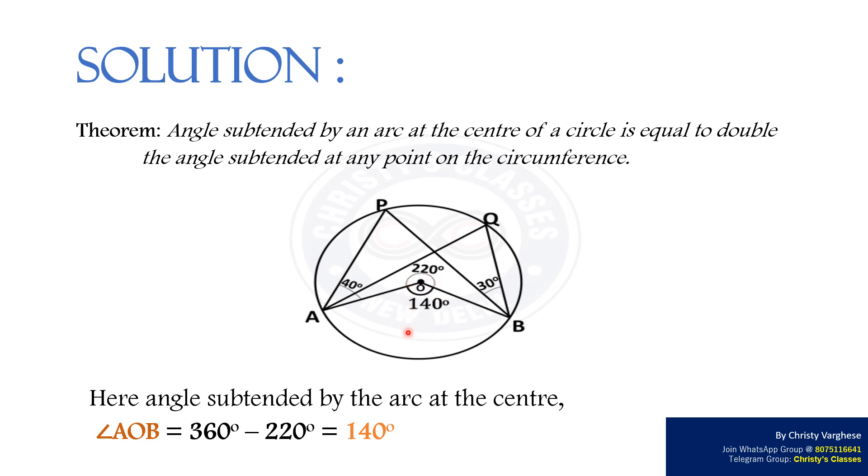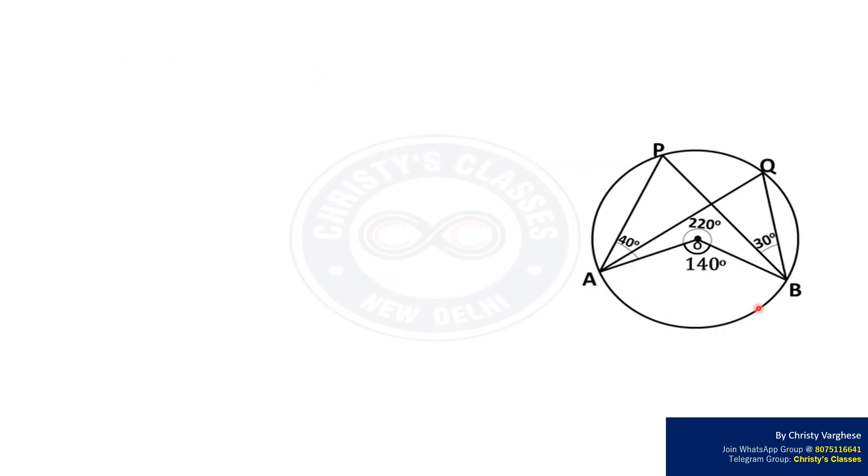By the above theory, the angle subtended by an arc at the center of a circle is equal to double the angle subtended at any point on the circumference.